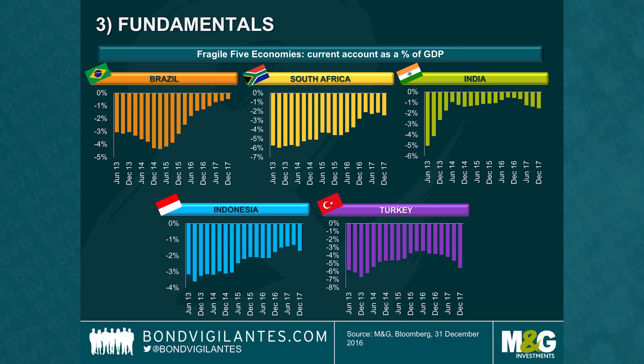If we focus on emerging market currencies, fundamentals here have been improving over the last few years, particularly since 2013 when we had the famous taper tantrum. Look at the so-called fragile five economies — the current account in these economies has been improving over the last few years. The only exception here is Turkey, where the currency remains very much under pressure. Recently some other emerging market currencies have also come under pressure, mainly because of the stronger dollar and political uncertainty. But the fundamental picture remains supportive and many emerging market currencies today actually offer good valuation and a very positive carry.